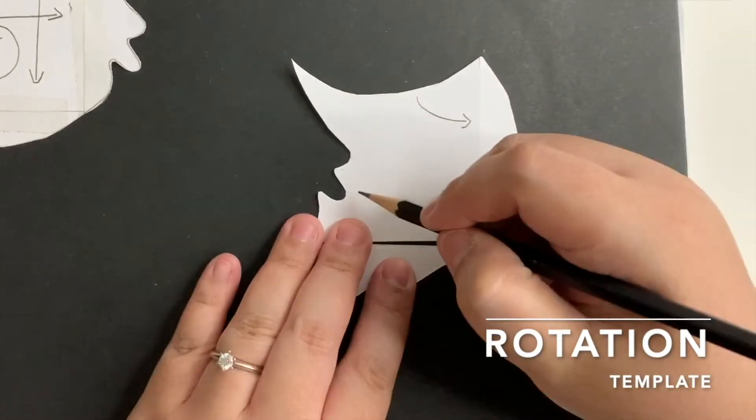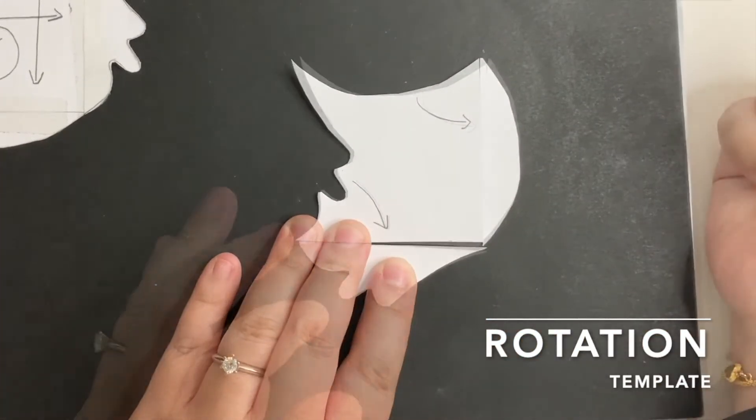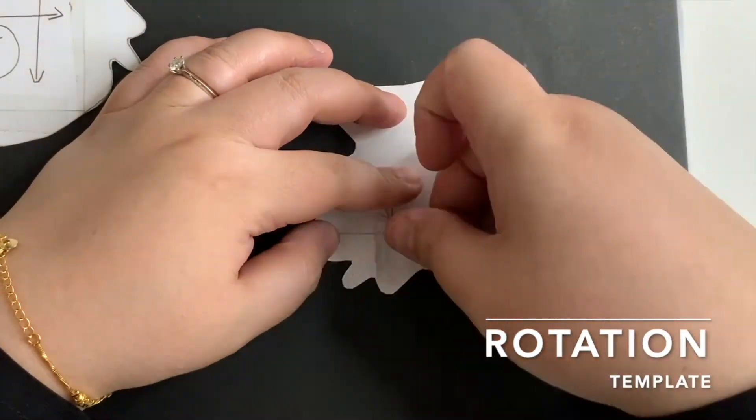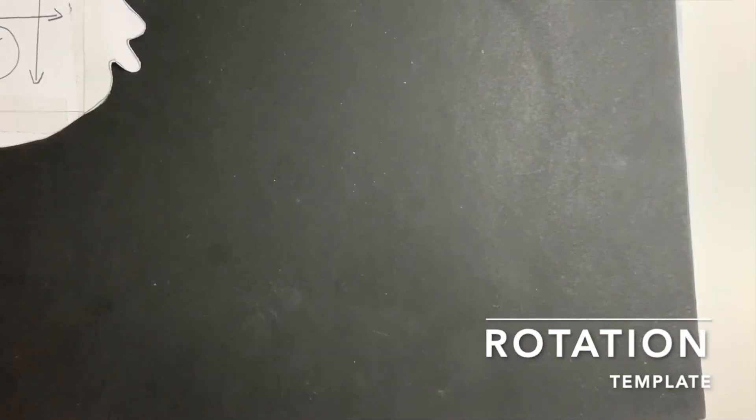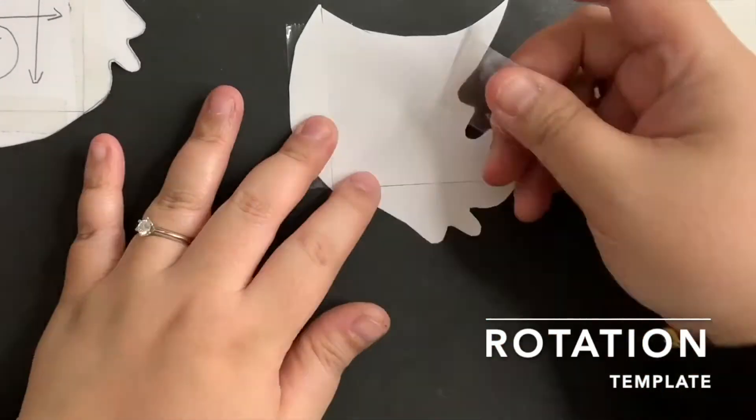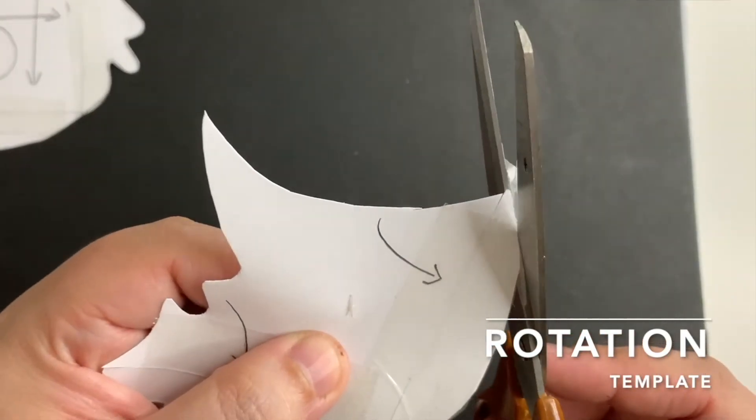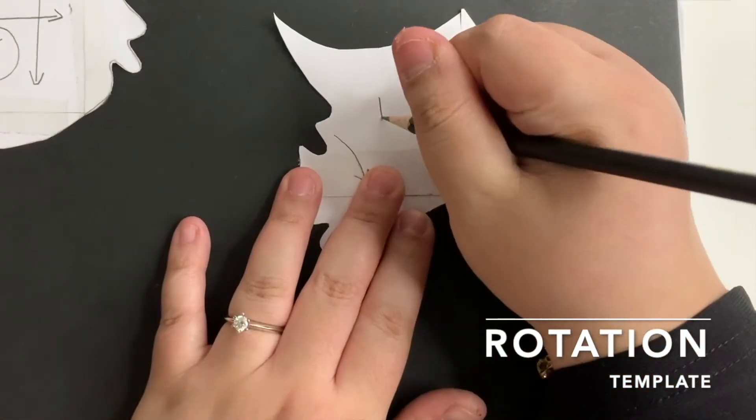Tape these two sides down carefully without leaving any gaps in between the joints. Don't forget to tape the reverse sides too. Trim the excess tapes. This is the rotation template.